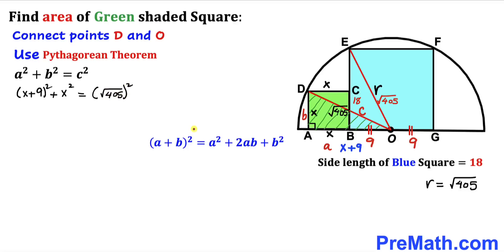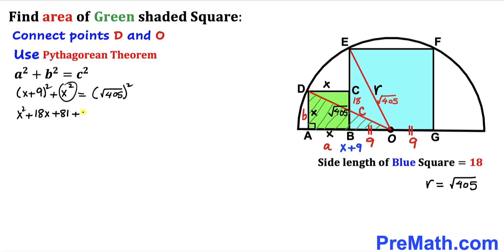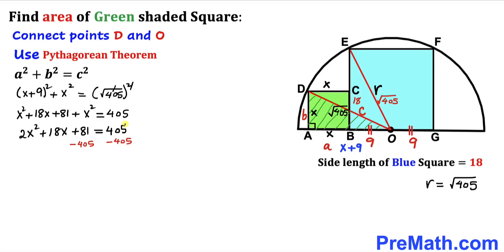Applying the identity (a + b)² = a² + 2ab + b², we expand (x + 9)² to get x² + 18x + 81. The equation becomes x² + 18x + 81 + x² = 405. Combining like terms: 2x² + 18x + 81 = 405. Subtracting 405 from both sides gives 2x² + 18x − 324 = 0.